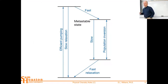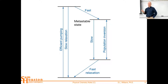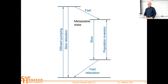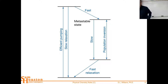For a typical laser we need efficient pumping - a substance that will absorb light in the visible or UV region efficiently. It has a huge absorption peak, so light efficiently pumps this molecule or atom to an excited state. Then we often have a state where it relaxes through non-radiative relaxation.